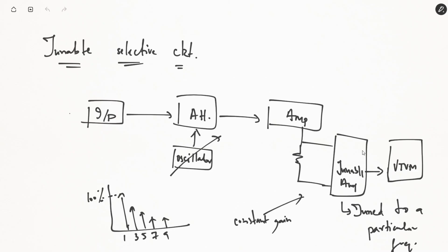In the tunable selective circuit, we set the attenuator to a particular frequency level using the oscillator. Using a tunable amplifier we can either allow a particular frequency component to pass through, or if using a constant gain amplifier with the attenuator set to 100% of the fundamental frequency, harmonics can be measured using the VTVM as a fraction of the magnitude of the fundamental frequency component.